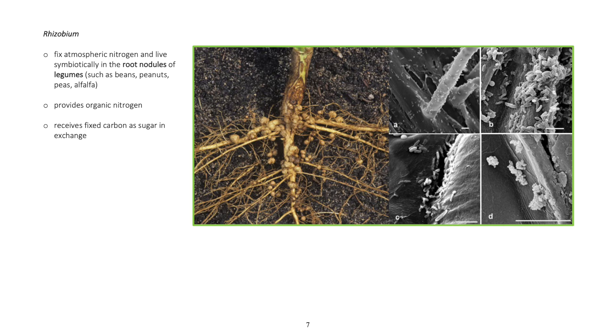Rhizobium: Fix atmospheric nitrogen and live symbiotically in the root nodules of legumes such as beans, peanuts, peas, alfalfa. Provides organic nitrogen. Receives fixed carbon as sugar in exchange.